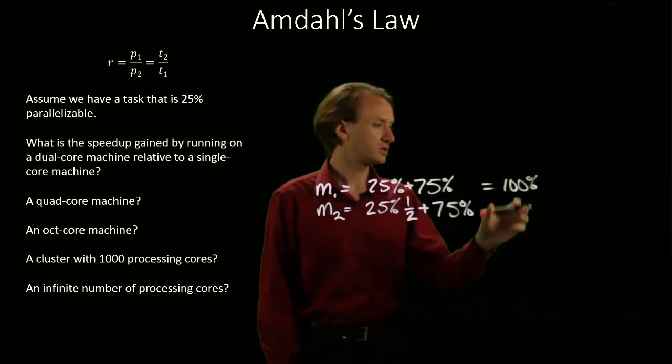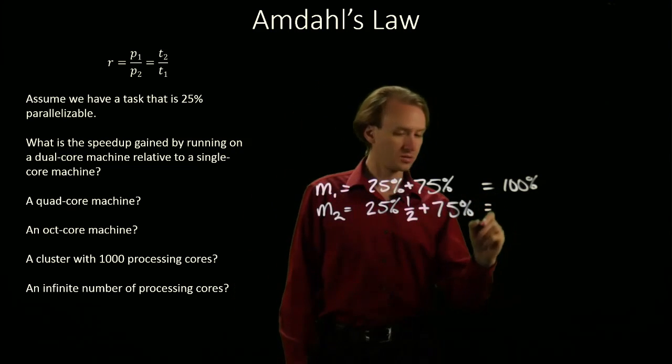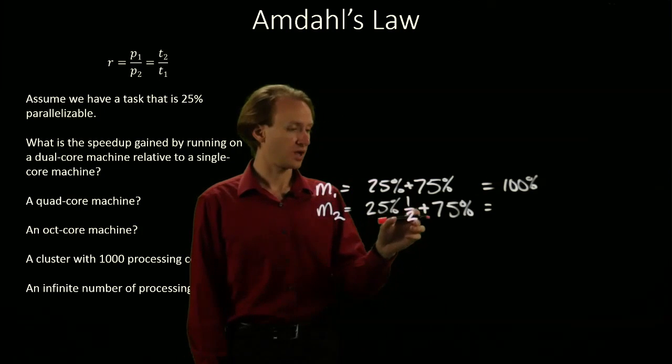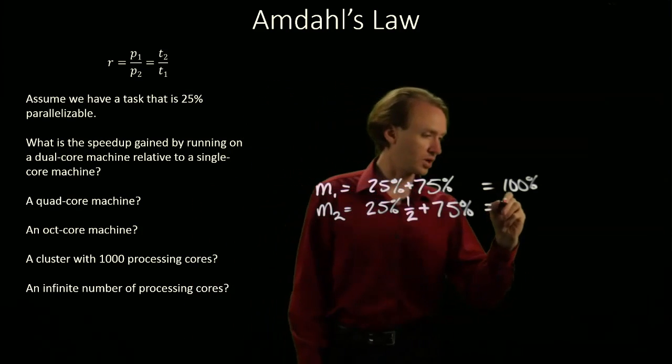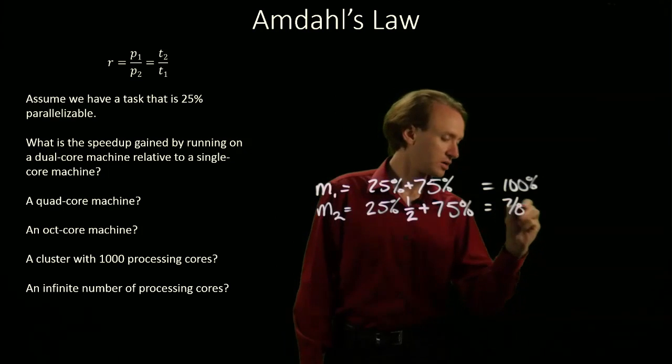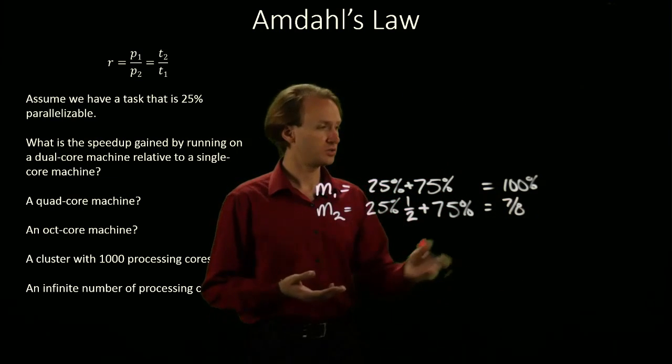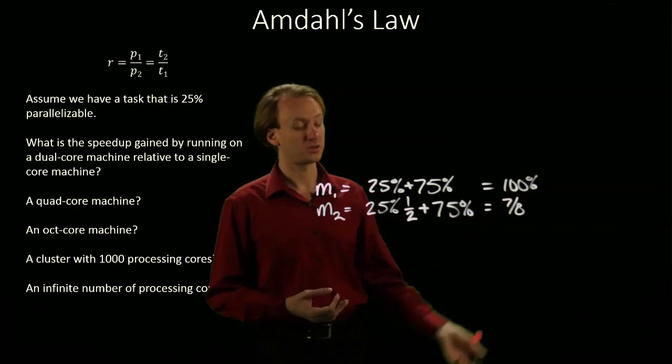Machine 1 takes 100% of the time, that's our baseline. Machine 2 takes 75% plus half of a fourth, which is an eighth, so I get 7/8. Machine 2 with 2 cores is 8/7 times faster than machine 1.